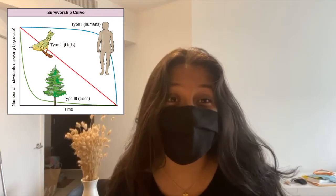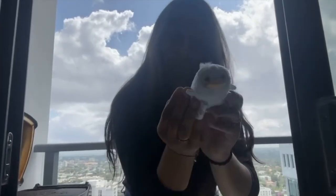Let's talk about the different types of survivorship curves. Type 1 shows a low death rate during the early and middle stages of life, with a higher death rate toward later life — this is seen in humans. Type 2 shows a constant death rate over the lifespan, typically seen in birds. Type 3 shows a high death rate early in life — for example, trees or plants when they are seeds — followed by a lower death rate once they survive that early stage and become mature plants.